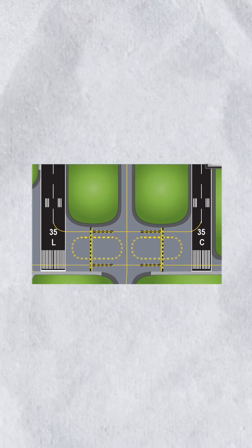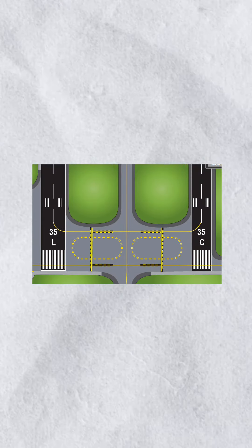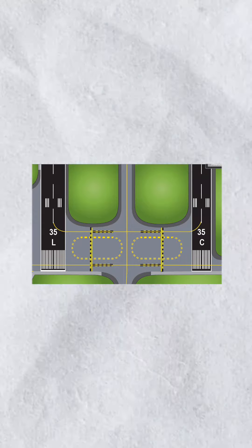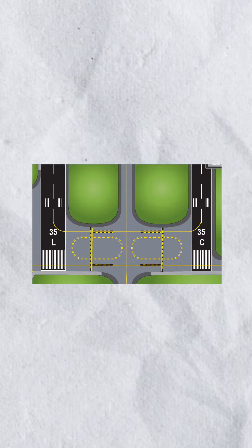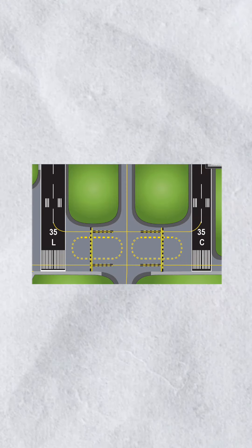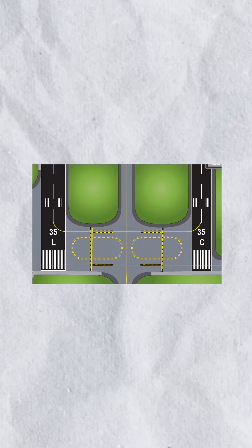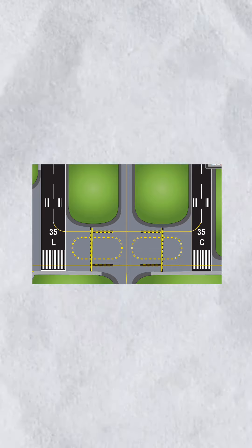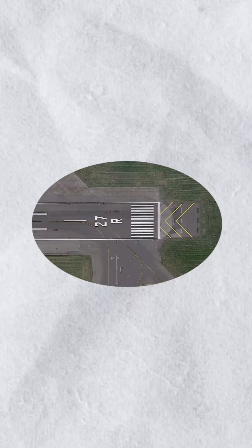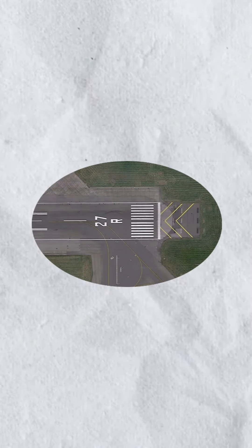At some airports, there are 3 runways in the same direction. If you add L to the heading, that is the left runway. If you add C, that is the center runway. If you add R, that is the right runway. This is how these parallel runways are differentiated.